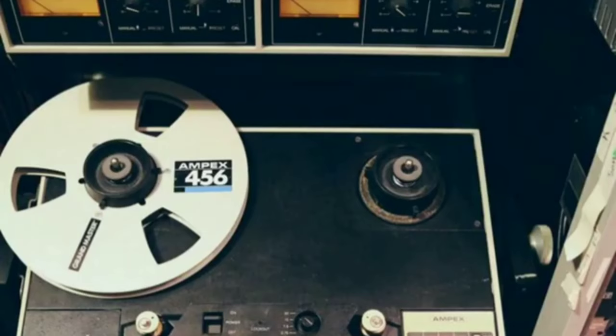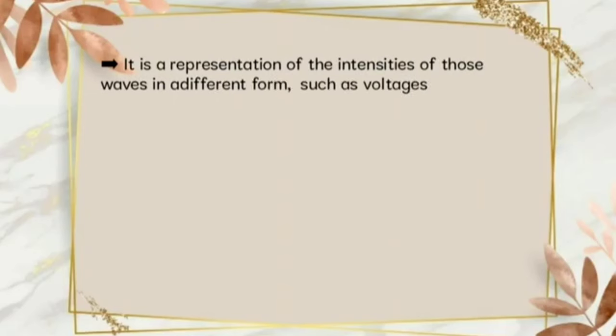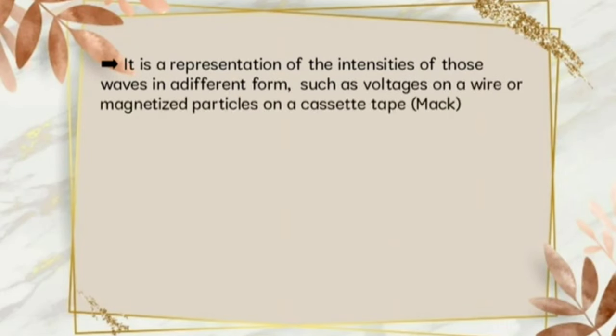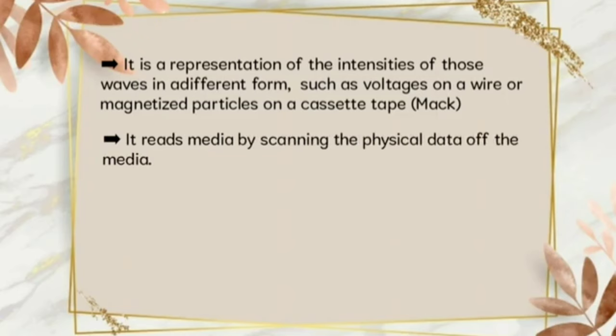It records and reproduces sounds much more accurately but suffers from electric noise issues. Analog audio media is much more bulky, expensive, harder to produce, maintain, and distribute. It is a representation of the intensities of those waves in a different form, such as voltage on a wire or magnetized particles on a cassette tape. It reads media by scanning the physical data of the media. For example, audio tape players, VCRs, and record players.